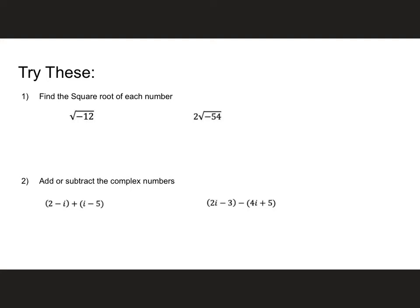The square root of negative 12: split it up into the square root of negative 1 times the square root of 12. The square root of 12 simplifies further to the square root of 4 times the square root of 3. The square root of 4 turns into 2, the square root of negative 1 is i, and the square root of 3 is left over. Final answer: 2i√3.